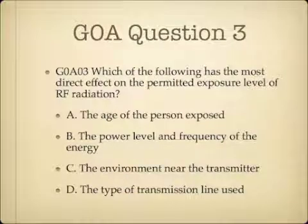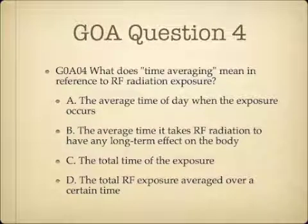Question 3. Which of the following has the most direct effect on the permitted exposure level of RF radiation? A, the age of the person exposed; B, the power level and frequency of the energy; C, the environment near the transmitter; or D, the type of transmission line used? Question 4. What does time averaging mean in reference to RF radiation exposure? A, the average time of day when the exposure occurs; B, the average time it takes RF radiation to have any long-term effect on the body; C, the total time of the exposure; or D, the total RF exposure averaged over a certain time?